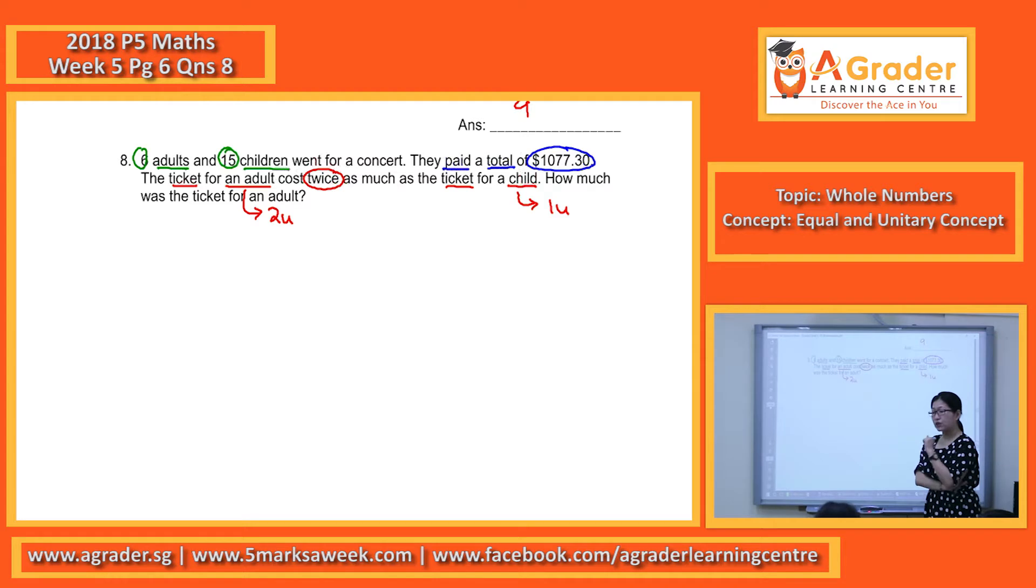But I want you all to think in another way. If I buy 1 adult ticket, how many children tickets can I buy? 2, right? So 1 adult ticket is actually equals to 2 children tickets.